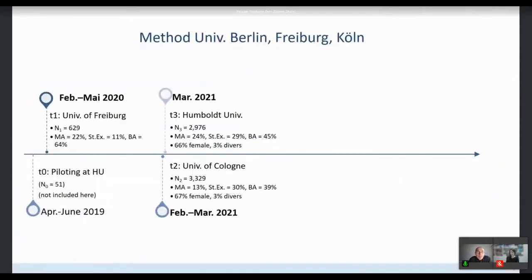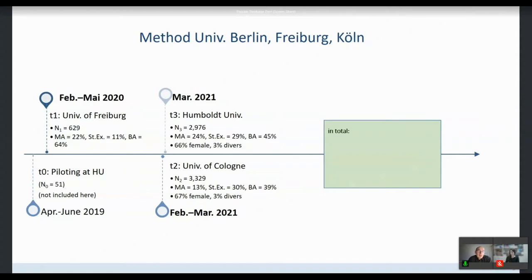There were different time slots for data collection, all within the COVID pandemic. Data were collected in Freiburg from February to May 2020, and at Humboldt University and the University of Cologne in spring 2021. We had many master students but the biggest part was bachelor students, with 67 percent female and the rest diverse and men.